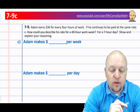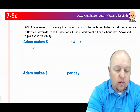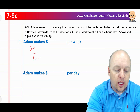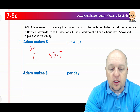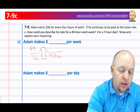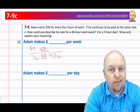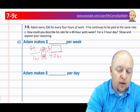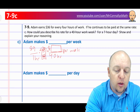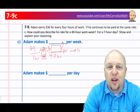Question C: Adam earns $36 for every 4 hours. If he continues, how could you describe his rate for a 40-hour work week? We know it's $9 per one hour, and we want to know how much he'd earn in 40 hours. We want to multiply this fraction by a big giant 1. 1 times what number gives you 40? That's easy — it's 40. So put a 40 here and a 40 on top. 9 times 40 will give how much money he makes per week. Make sure you put it in a complete sentence.